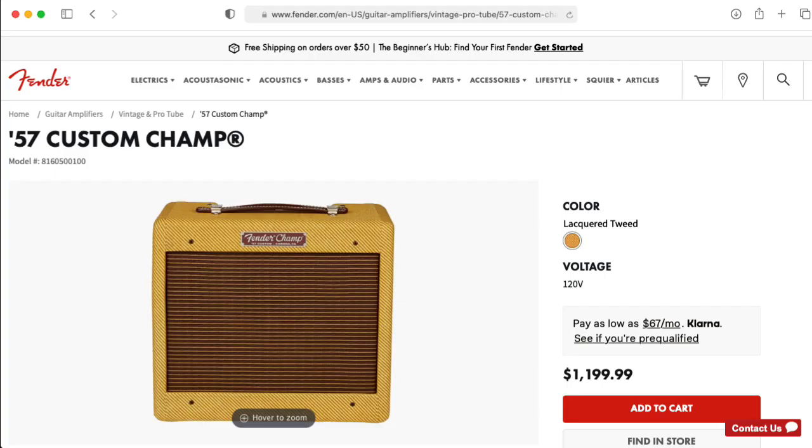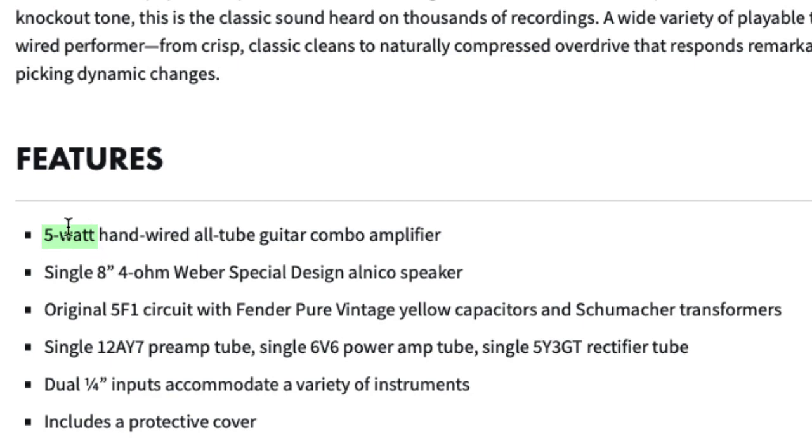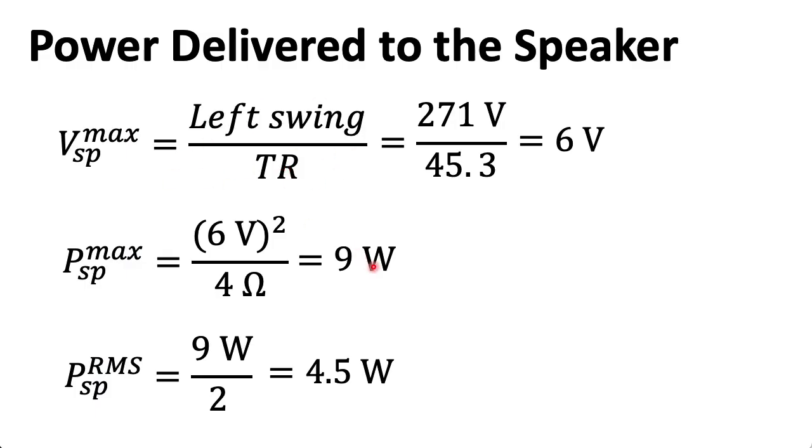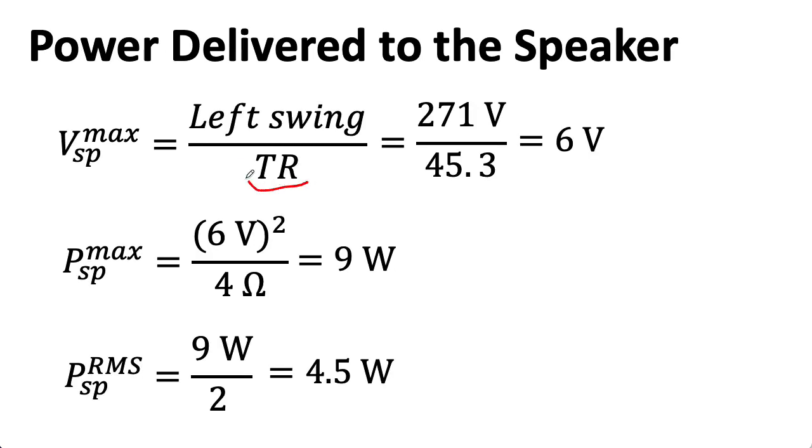And, let's take a look here. The published power spec of a Fender Champ is indeed 5 watts. So, we're in the ballpark. Now, I can compute this power a different way. We know that power is conserved across the transformer, so I could just compute the power on the tube side. So, I would have 271 volts squared divided by the impedance seen on the tube side, which is 8.2 kiloohms, which gives me 9 watts. I divide that by 2, and I get 4.5. So, I didn't necessarily need to compute this turns ratio in the previous lecture to do this computation, but I think there is some insight gained into seeing this computation done on the speaker side.